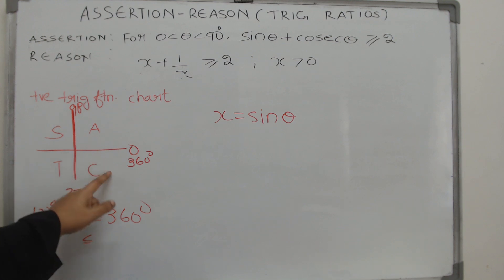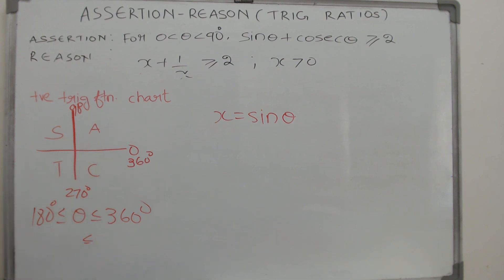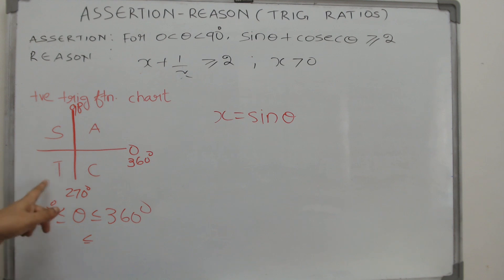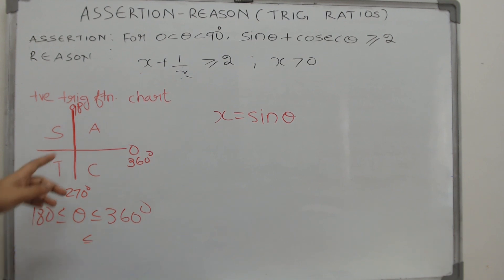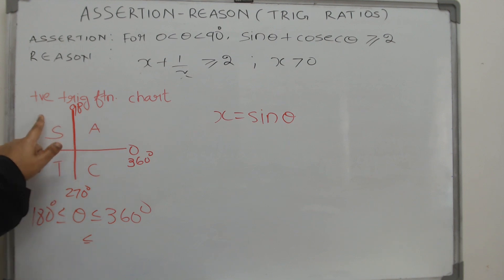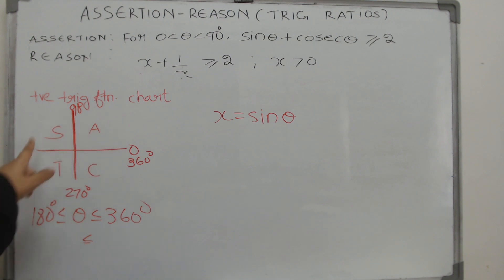There are many ways to remember this. Some people say 'Add Sugar To Coffee,' and some say 'Add Salt To Curry.' However you want to remember it is fine, as long as you don't mix them up. Just remember this chart — it tells you which trigonometric functions are positive in each quadrant.